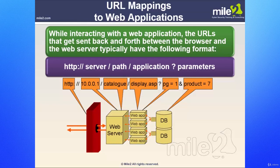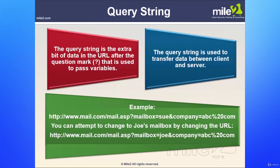Here we can see URL mappings to web applications. While interacting with a web application, the URLs sent back and forth between the browser and the web server typically have the following format: the HTTP protocol, the server name or IP address, the directory path on the server, and the web app — in this case ASP — which provides access to the database. The question mark parameter — the query string — is the extra bit of data in the URL after the question mark, used to pass those variables.